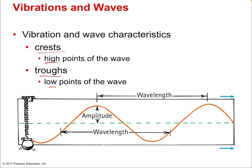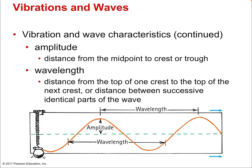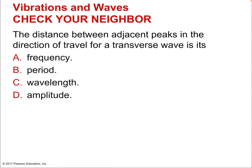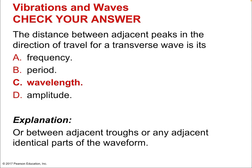Key terms to remember: amplitude, wavelength, crest, and trough. The green line represents the equilibrium — the midpoint, or more technically a force equilibrium, a balance point. The distance between adjacent peaks in the direction of travel for a transverse wave is its wavelength — the same as the distance between adjacent troughs.